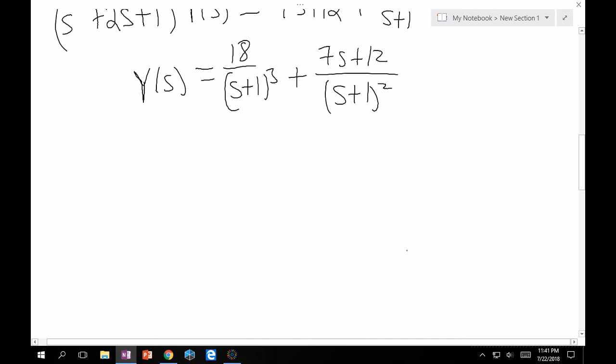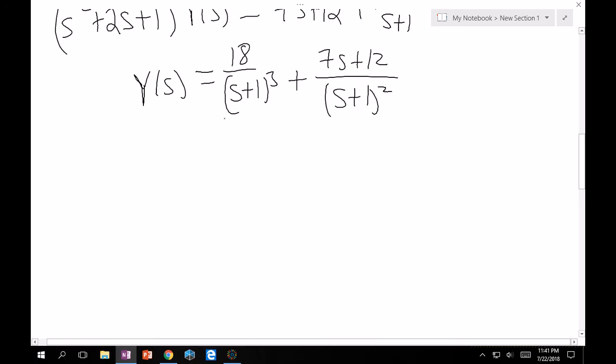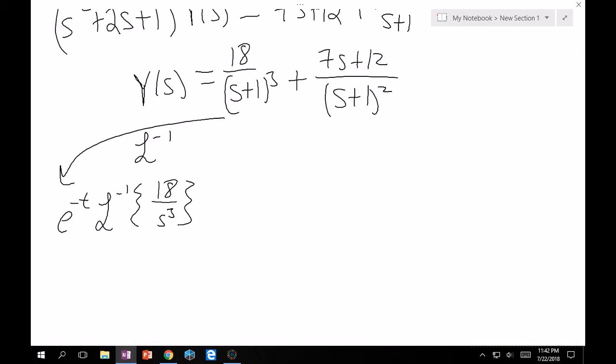Now, we just have to take the inverse Laplace of this. So, inverse Laplace of this one. Let's think about this. It's clearly shifted in s, which means that there's going to be an e minus t. And then, we want to take inverse Laplace of 18 over s cubed. S cubed, that sounds like t squared. The Laplace of t squared would give me 2 over s cubed. So that means there's a factor of 9 that I have to take into account, which means that this is really e minus t times 9t squared. So that's the inverse Laplace of that first term.